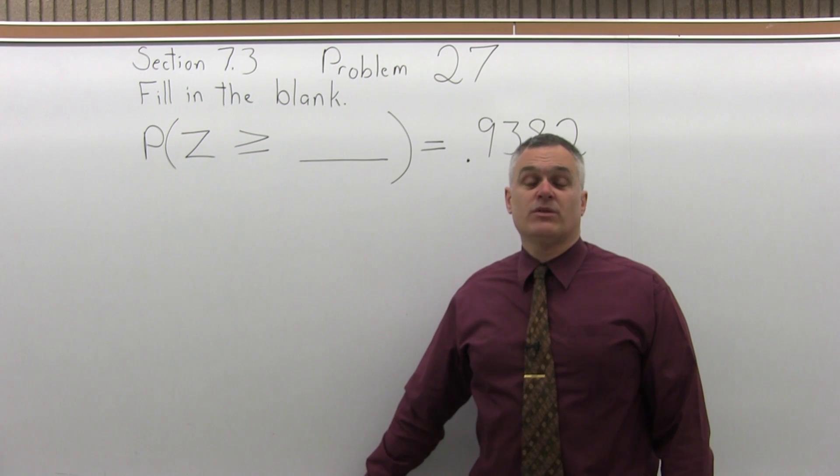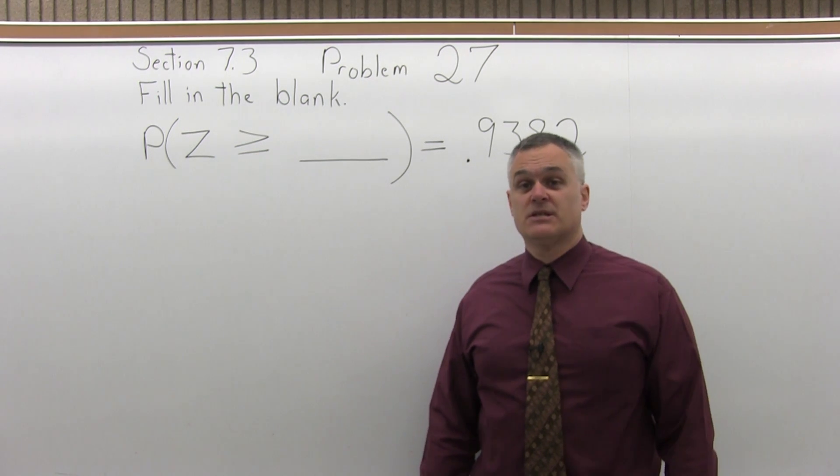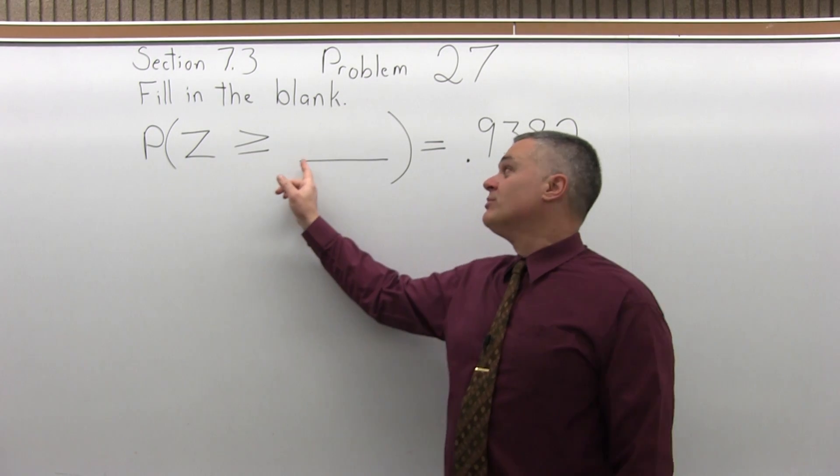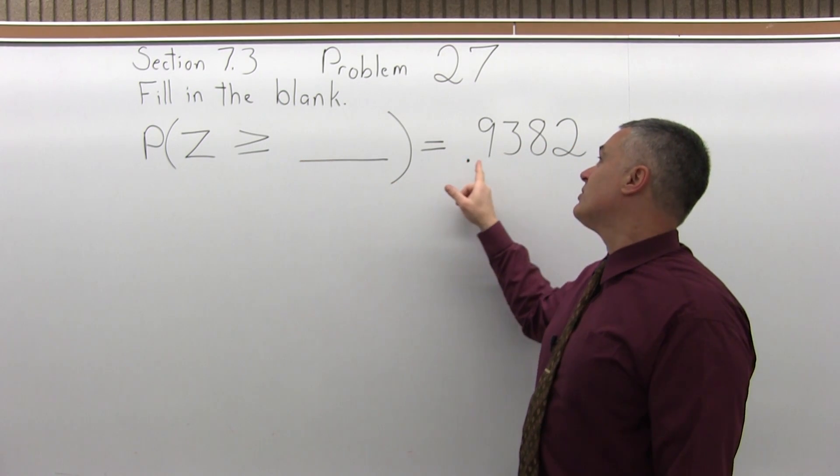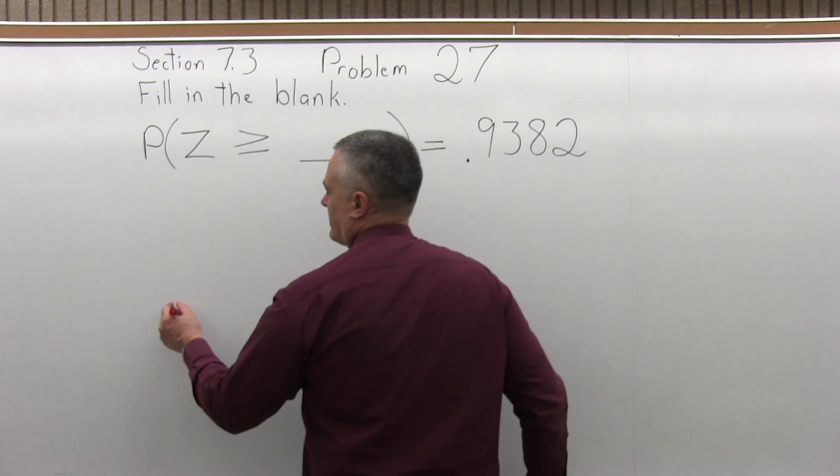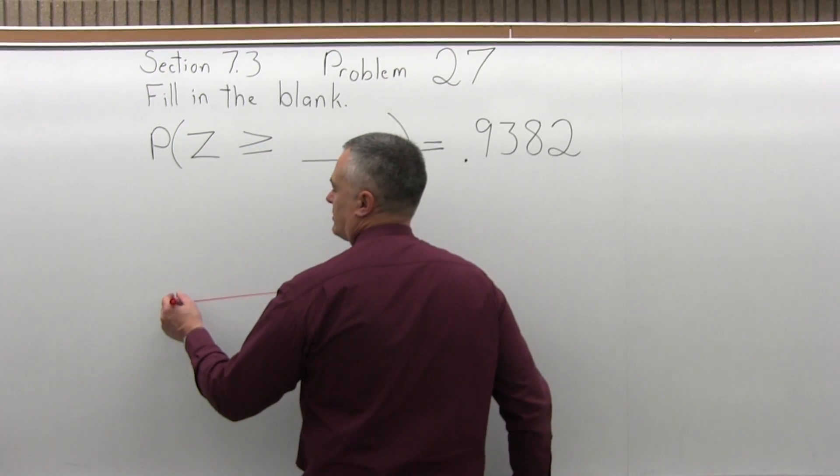This is Section 7.3, Problem number 27. It says fill in the blank. The probability that Z is greater than or equal to blank equals .9382. So let's start by getting a look at what this question would look like visually.